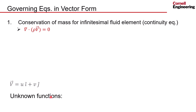The unknown functions are: u(x,y), v(x,y), and since density is also unknown, rho(x,y). So we have one scalar equation but three scalar unknowns.